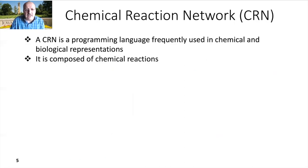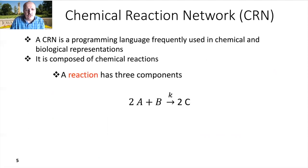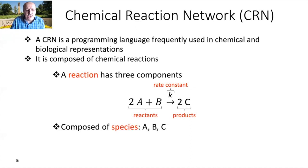More specifically, what is a chemical reaction network? A CRN is a set of reactions which define the behavior of the program. Each reaction consists of three components: a multi-set of reactants on the left side, a multi-set of products on the right side, and the rate constant which affects the speed of the reaction. Reactions are composed of species, and the reaction above has three species: A, B, and C.